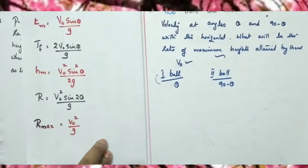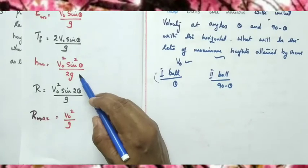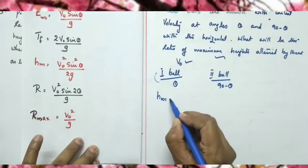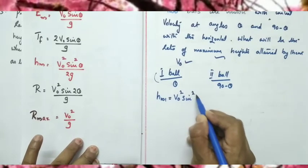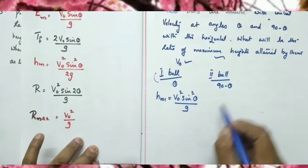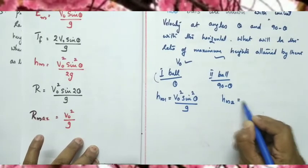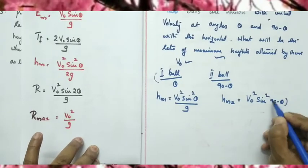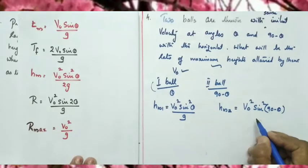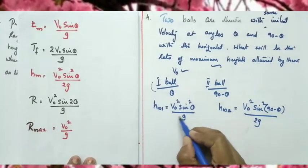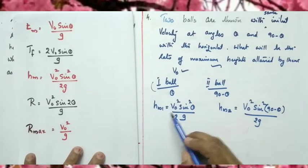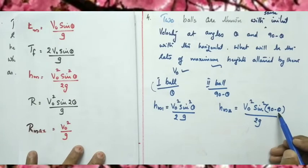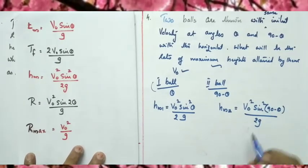Using the maximum height formula H = V₀² sin²θ / 2g: the maximum height for the first ball is H_M1 = V₀² sin²θ / 2g, and for the second ball is H_M2 = V₀² sin²(90° − θ) / 2g.